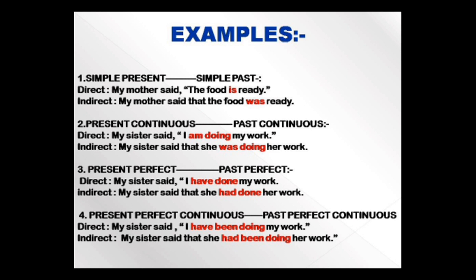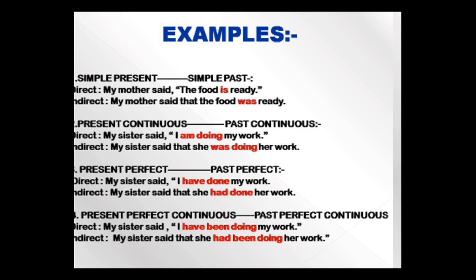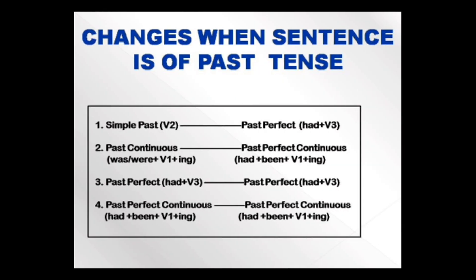Here are examples of present tense changes under a past reporting verb. 'My mother said, the food is ready' — simple present changes to simple past: 'My mother said that the food was ready.' 'My sister said, I am doing my work' — present continuous changes to past continuous: 'My sister said that she was doing her work.' 'My sister said, I have done my work' — present perfect changes to past perfect: 'My sister said that she had done her work.' 'My sister said, I have been doing my work' — present perfect continuous changes to past perfect continuous: 'My sister said that she had been doing her work.'